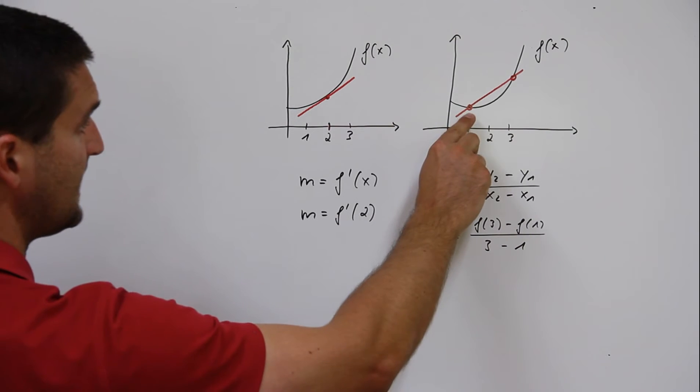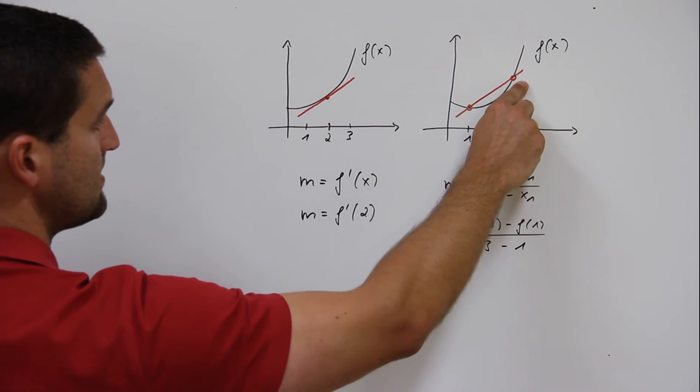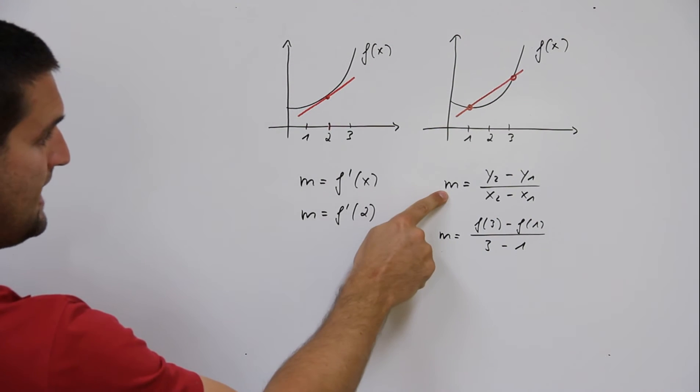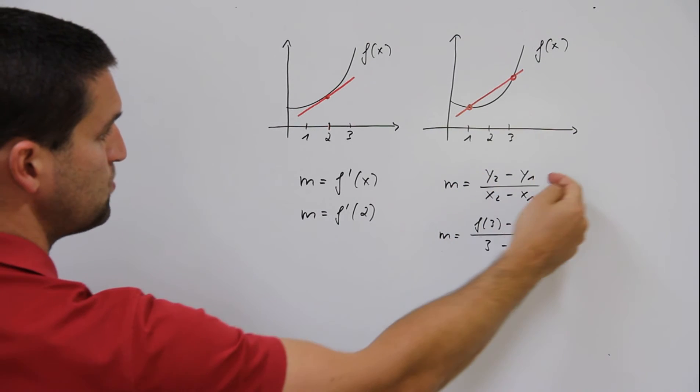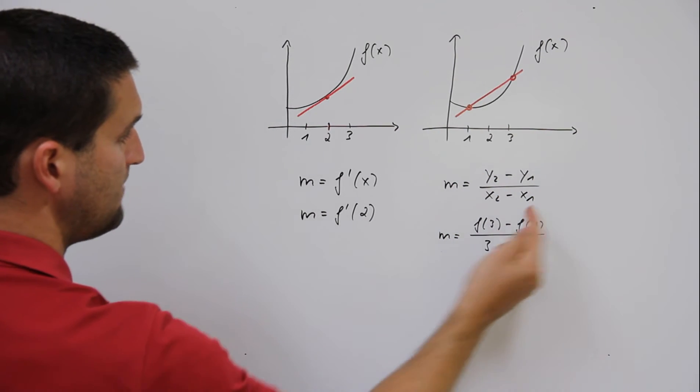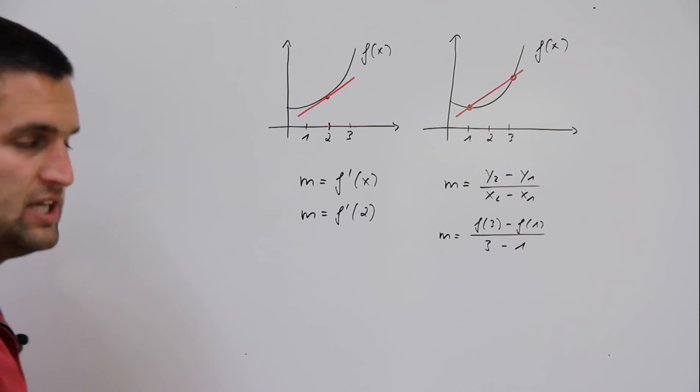The secant sustains a function in two points. The formula m equals y2 minus y1 divided by x2 minus x1. What does it mean? You need two points.